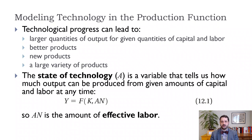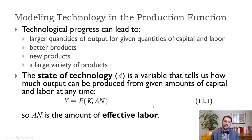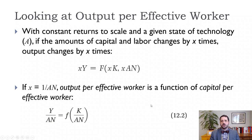We're going to put A in front of labor. So our production function now is a function of capital and AN, which we're going to call effective labor. The nice thing about this model is that we can take the model from Chapter 11, make a few changes here in Chapter 12, and get the same results — but we will have growth in output per worker, even if we don't have growth in output per effective worker.